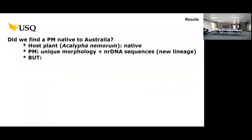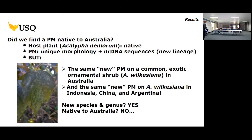So, did we find a powdery mildew native to Australia? It has unique morphology and a native host, but the same mildew was found on a very common ornamental shrub in Brisbane — Acalypha wilkesiana — with the same morphology and the same ITS, 28S sequences. Searching GenBank, the same mildew appears from Indonesia and even Argentina. So again, we have a mildew on an ornamental that may have been introduced with that ornamental and then jumped onto this native plant in the rainforest — not native to Australia.